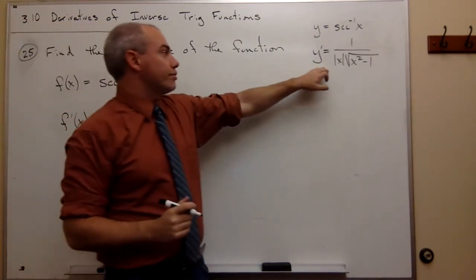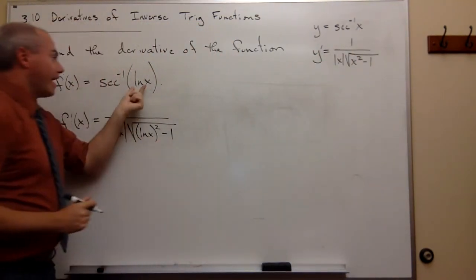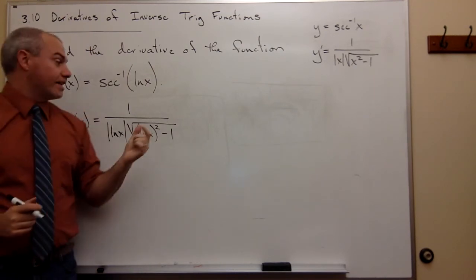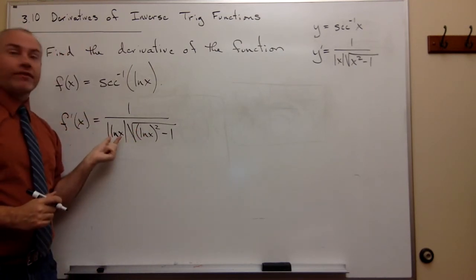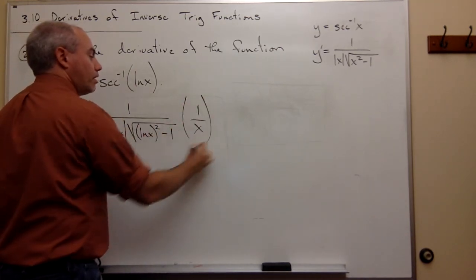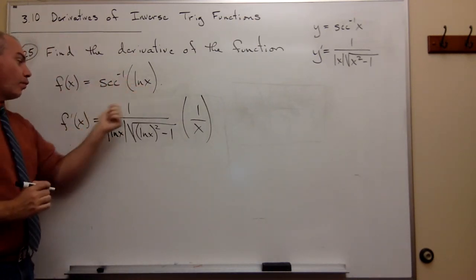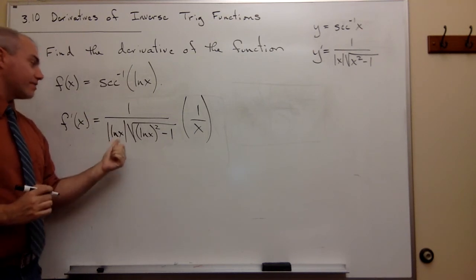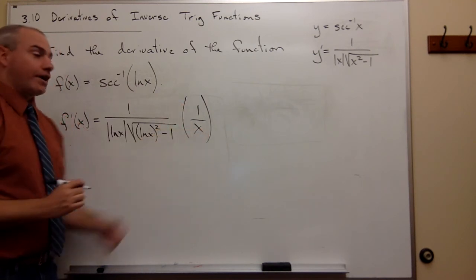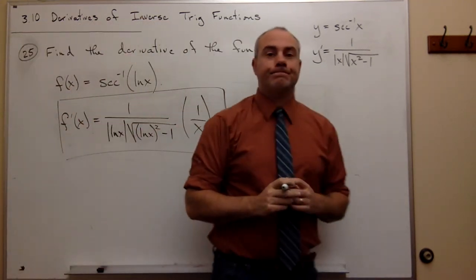There's one more thing I have to do by the chain rule: multiply by the derivative of ln(x), which is 1/x. So the derivative of sec⁻¹(ln x) is 1 over |ln(x)| times √(ln²(x) - 1), all multiplied by 1/x. And that's our derivative — we're done.